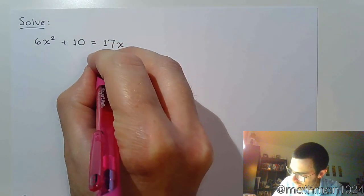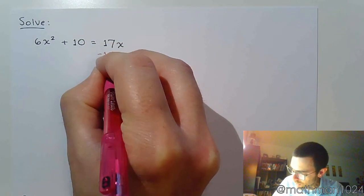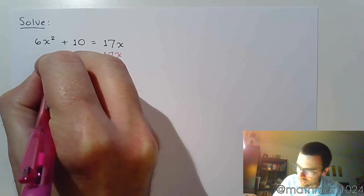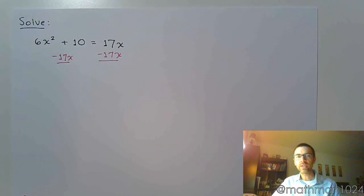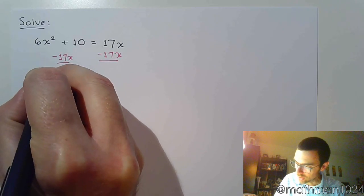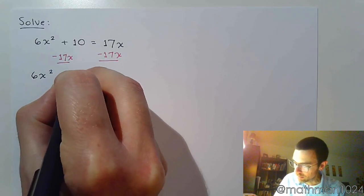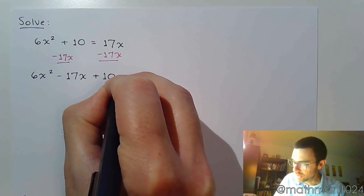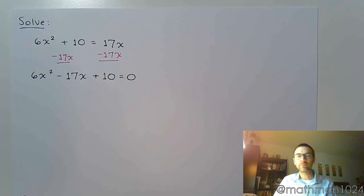So we need to move the 17x first. Let's subtract that over. Make sure that whenever you are putting everything on the same side, you arrange your terms in descending order. So that's 6x² - 17x + 10 = 0.